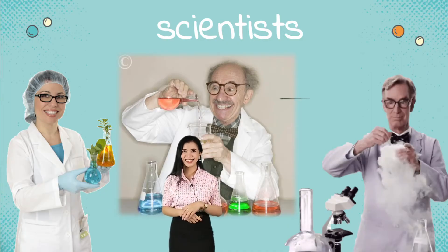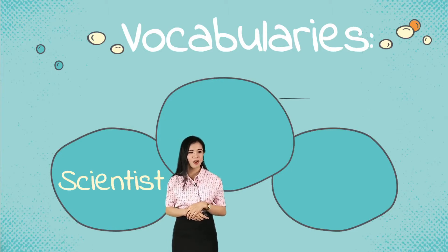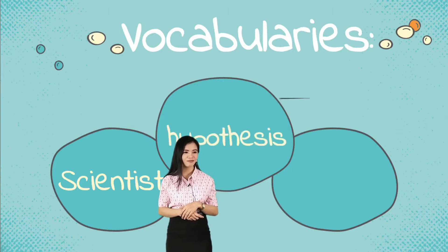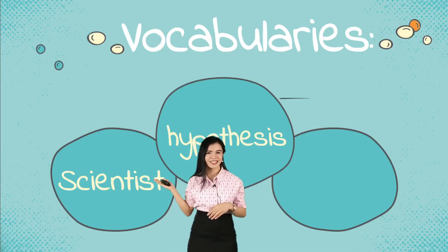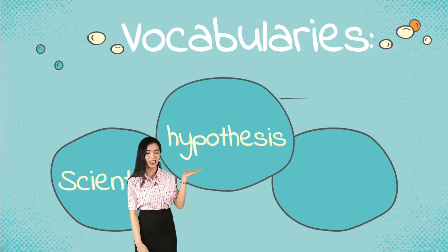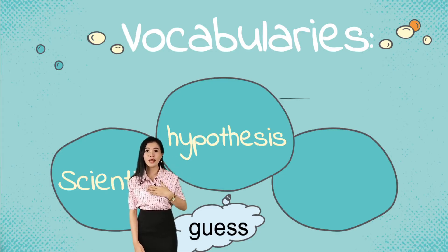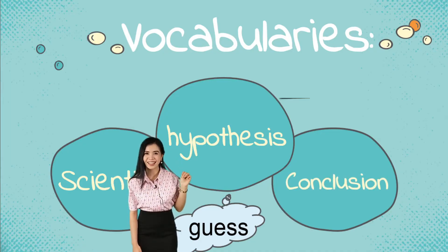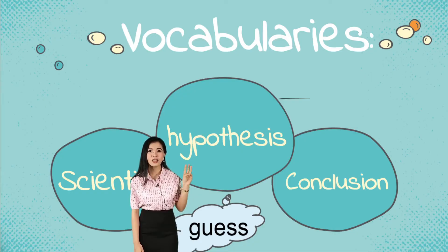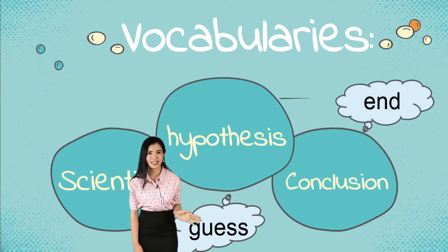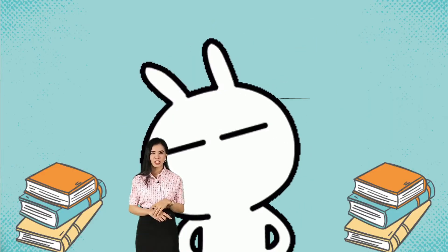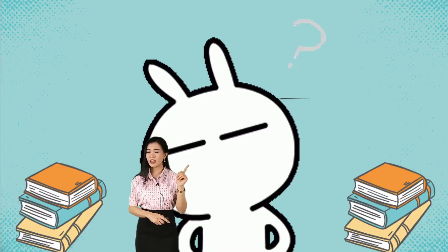The second word is 'hypothesis.' A hypothesis is an educated guess — these are the answers we make based on the information that we currently know. The third word is 'conclusion.' A conclusion is the end of the process.